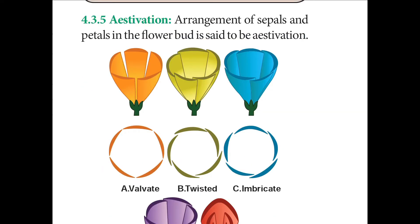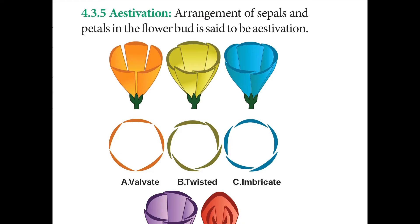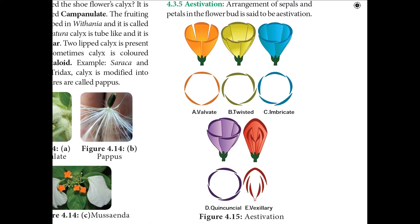Aestivation is the mode of arrangement of sepals and petals in a floral bud. The first type is valvate aestivation — the margins of the tepals or petals just touch each other without overlapping. Example: calyx of members of Malvaceae, Calotropis, and Annona. The second type is twisted or convolute (contorted) aestivation — one margin of each petal overlaps the next, so all petals overlap each other in one direction. Example: petals of China rose.